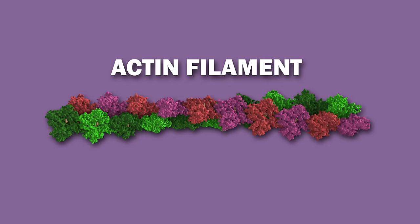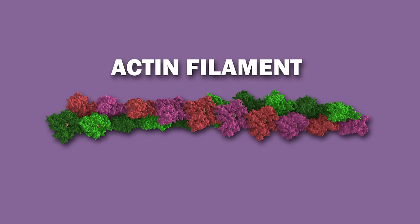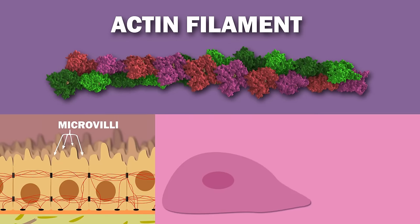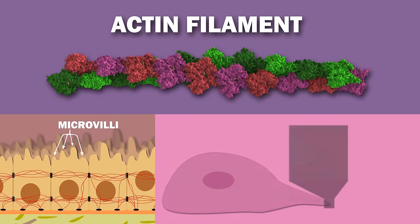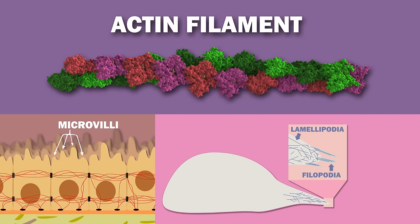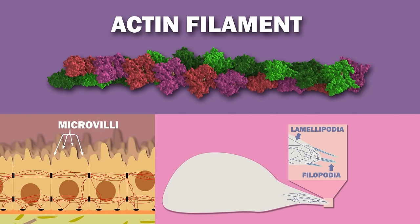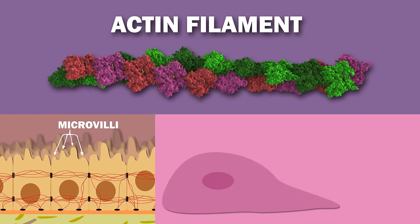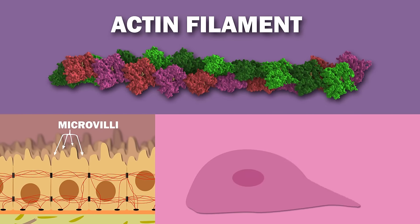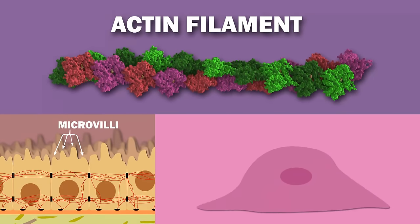Actin can form several kinds of cell surface projections, including microvilli, lamellipodia, and filipodia. These help move cells over solid substrates.